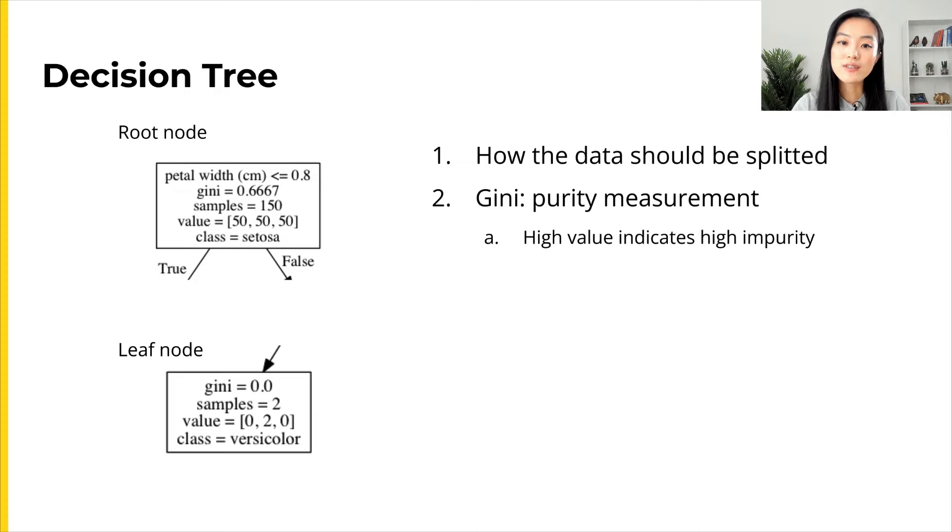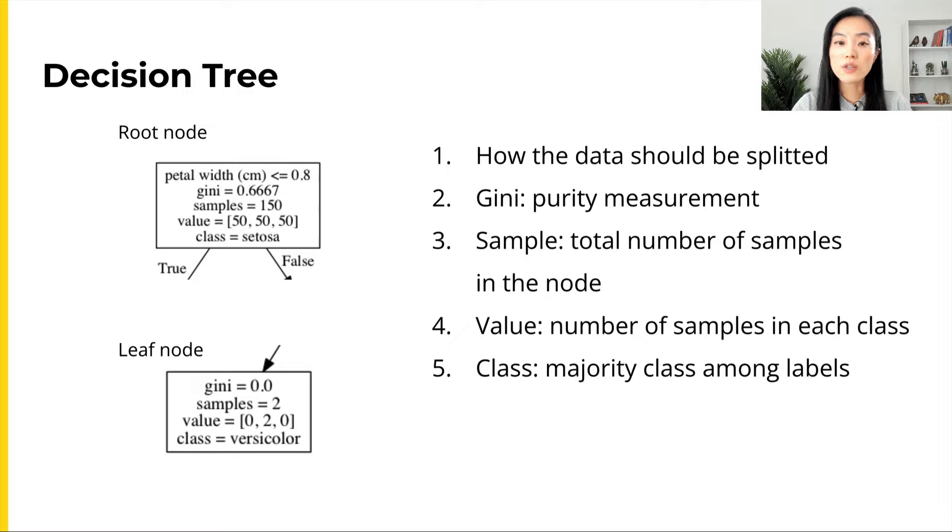The third line shows the number of samples or data points that are considered in this node. Next, the values show the number of samples in each class. For example, in the root node all classes have 50 data points. In the leaf node, the only two samples are both in the second class. The last line, class, shows the major class in that node.